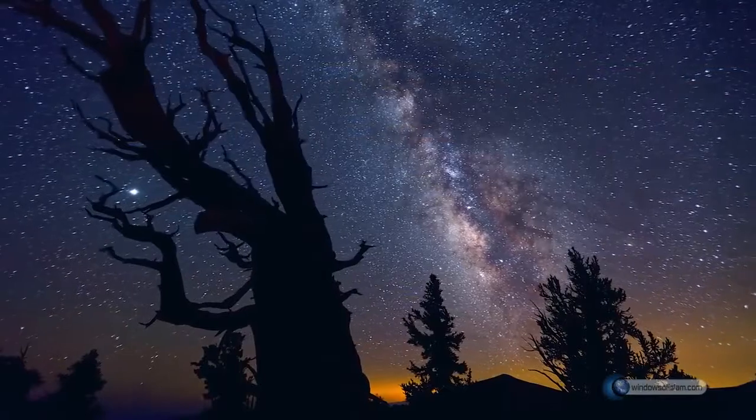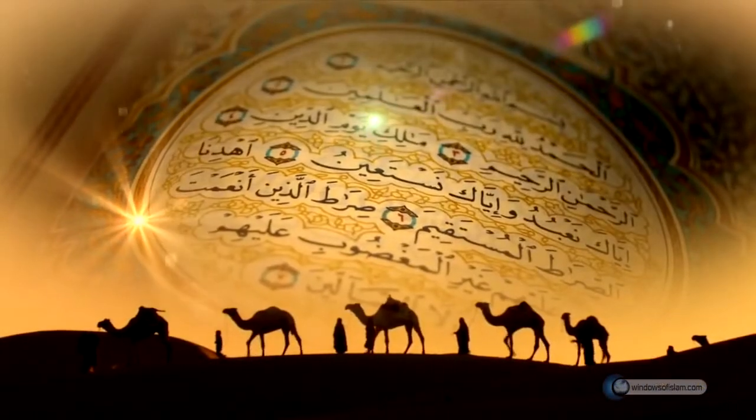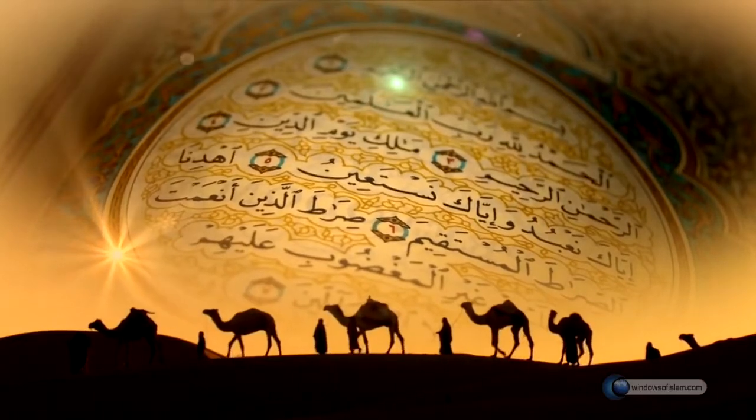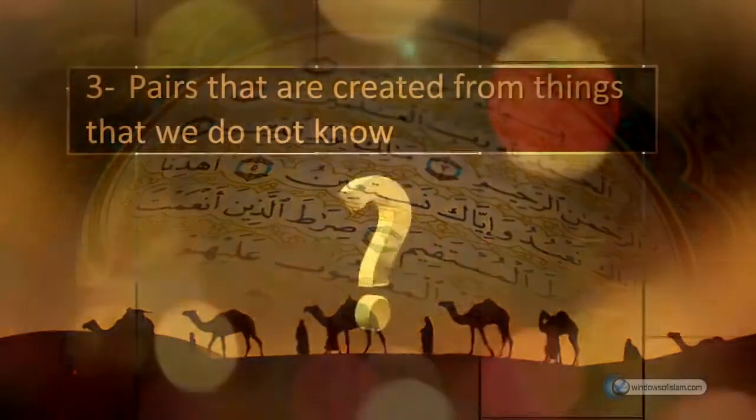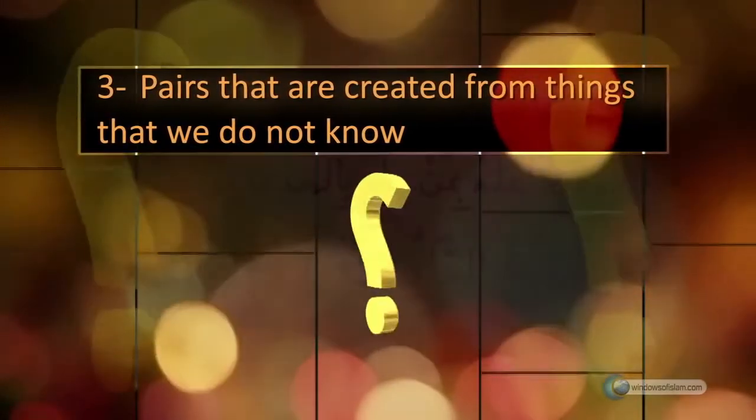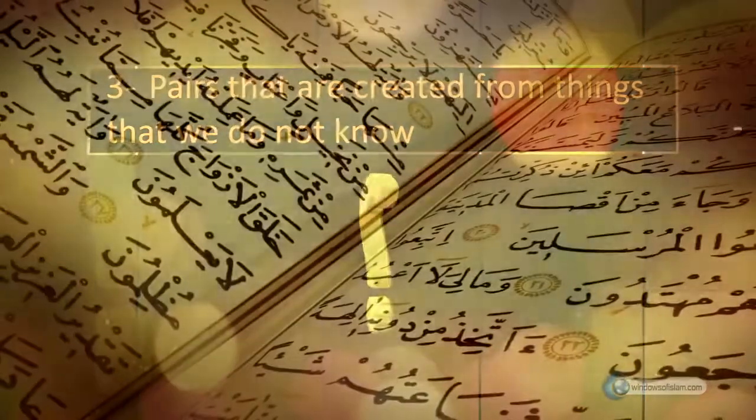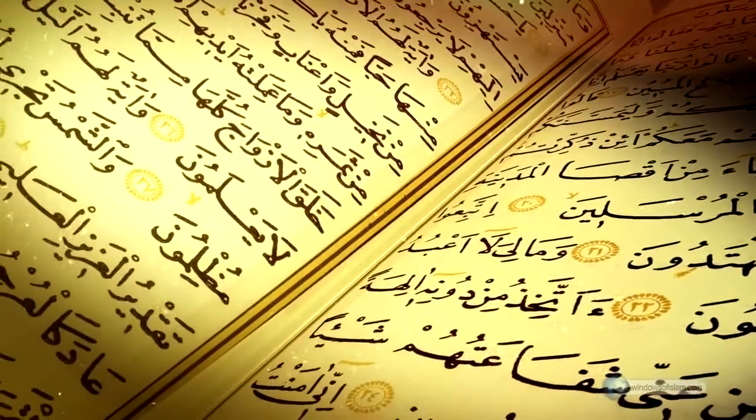The people who lived during the revelation of the Quran were not aware of most of the creation in pairs in the universe. While femininity and masculinity is the equivalence of the concept of pairs, the expression of the verse 'other things of which they have no knowledge' has a wider meaning. Thus, at the present time, we see one of the meanings that the verse indicates.